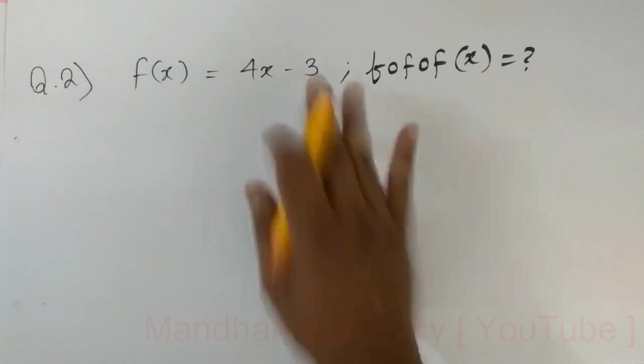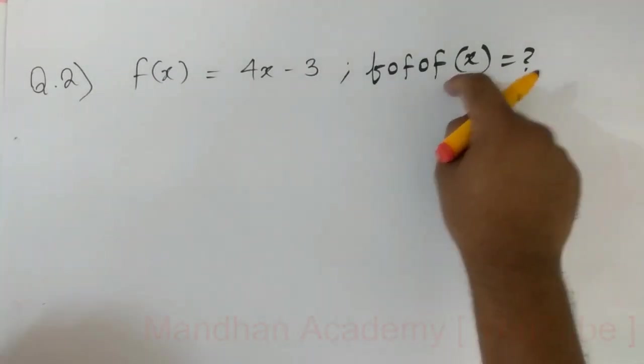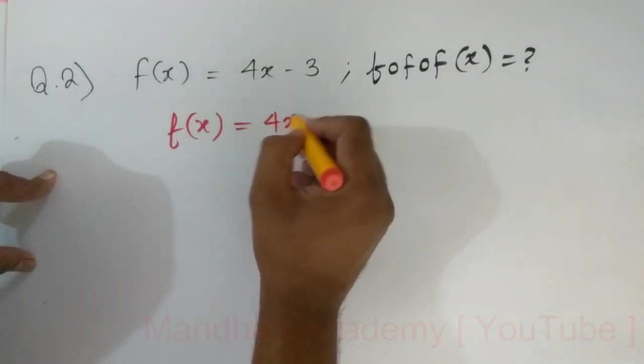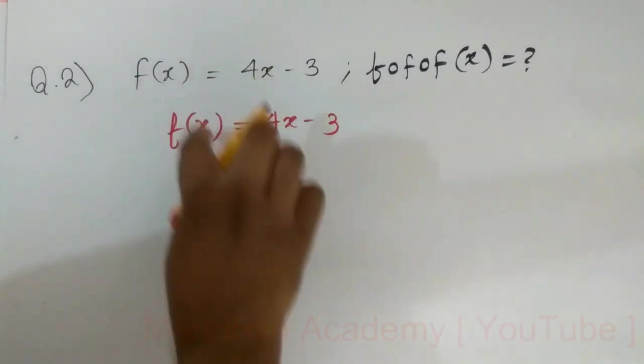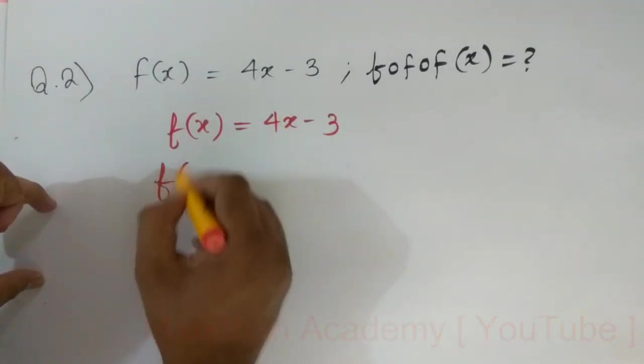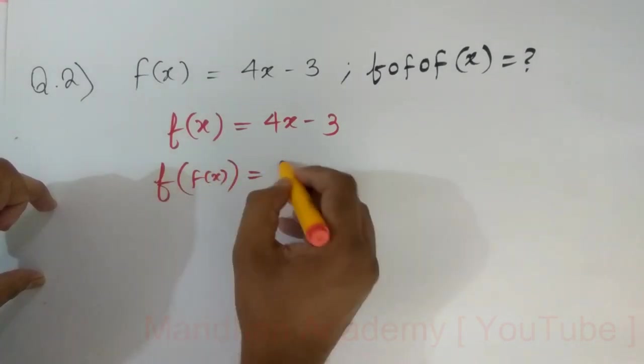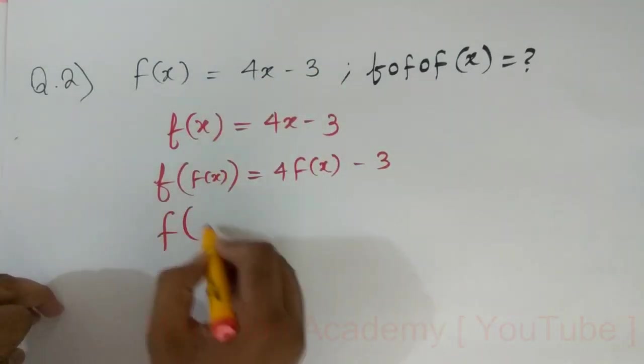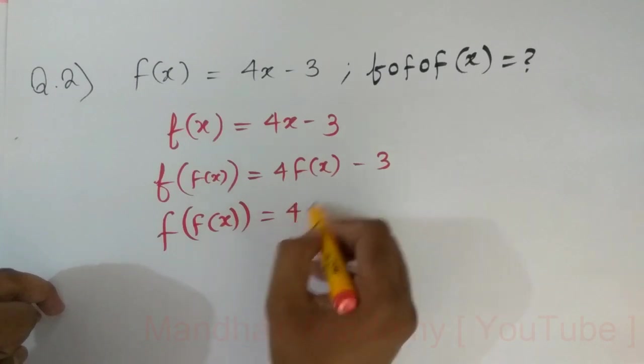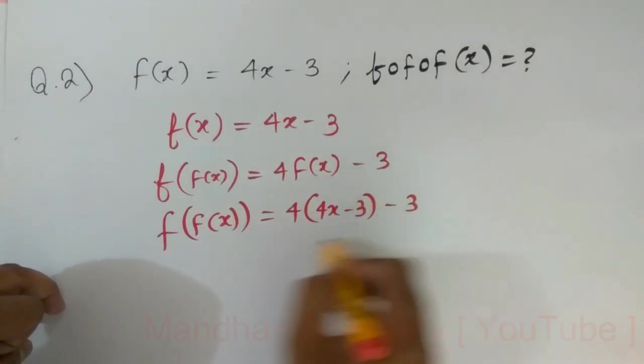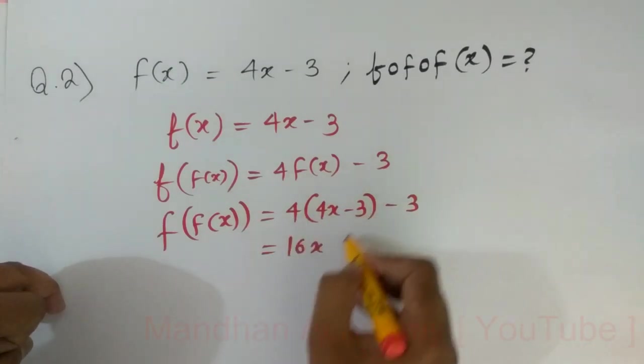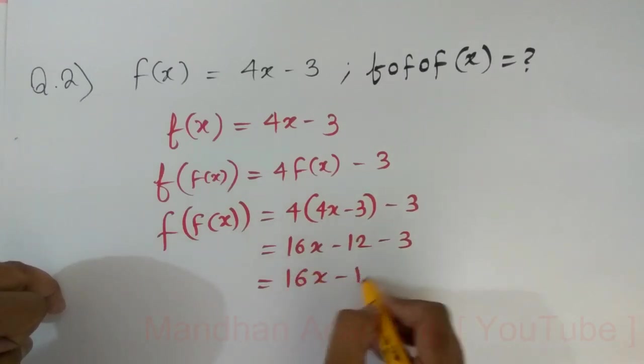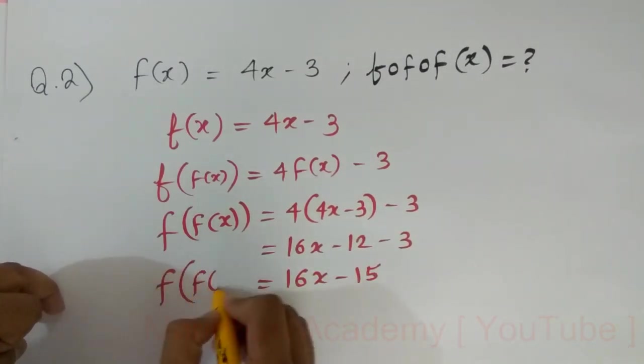Now the question is f of x is equal to something, find f of f of f of x. So first thing you need to remember is that write f of x. In every place of x, rewrite f of x. What is f of x? f of x is 4x minus 3. So I am left with 16x minus 15. This is f of f of x.